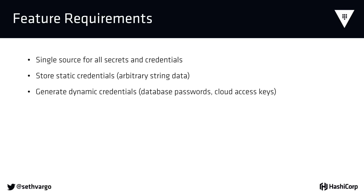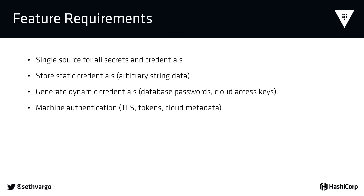Vault is able to generate dynamic secrets—great for things like database passwords or cloud access keys. For example, if I have a Postgres instance and want to generate a username and password for my application to connect to that database, instead of a human logging into Postgres and running the create user command, Vault can do all of that for us. It's fronted by an HTTP API, so anyone who is authorized and authenticated can hit that endpoint and generate a new credential. This allows for easy automation and integration at both the human and machine layers.